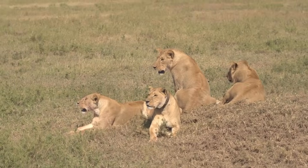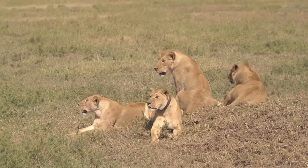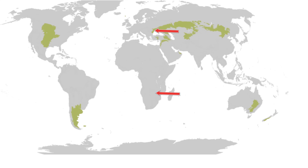You can find grasslands in South Africa, Hungary, Argentina, Uruguay, Russia, and the plains of Central North America.